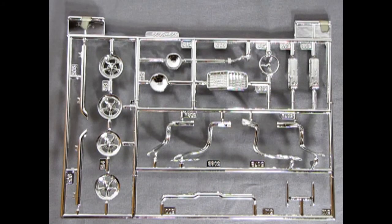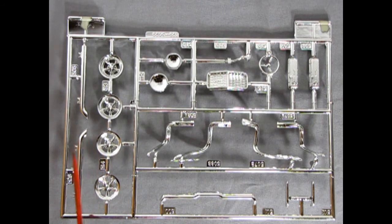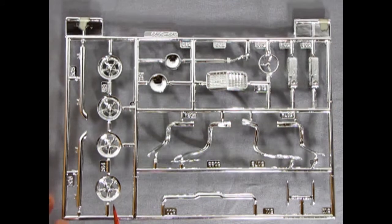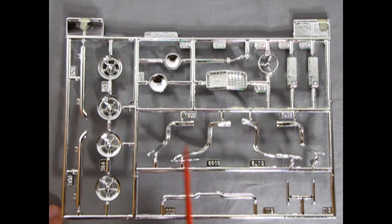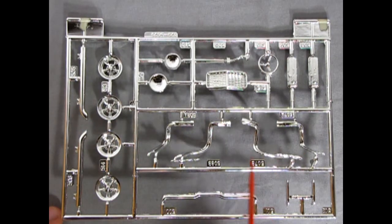Now we have my favorite part of all the model kits. And that, of course, is the chrome parts tree. So here we have these nice Cragar mag wheels sitting here. And our side pipes. And then the pipes from the manifold, which are chrome. That's great. I thought they might have been gray plastic.